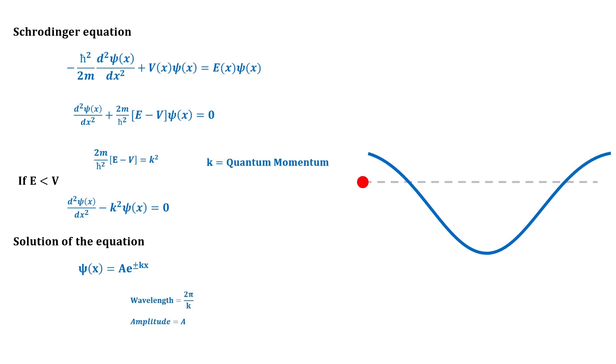Now suppose potential is not constant, but is varying with position. But this variation is much less than the particle's de Broglie wavelength.